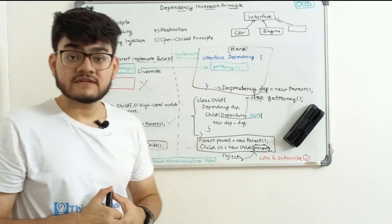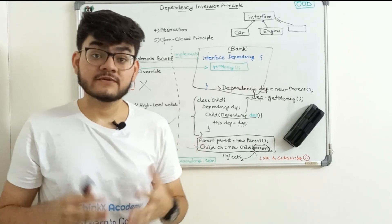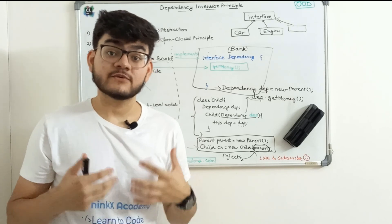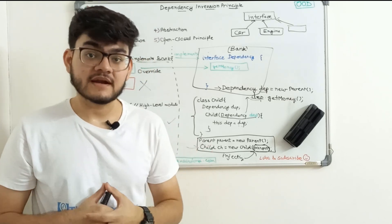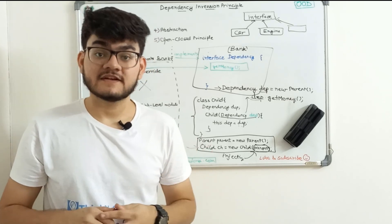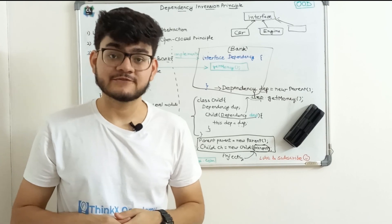These are the key important points of the Dependency Inversion Principle, and that's all for this video. In the next video onwards, we are going to start with the creational patterns, which are the 23 Gang of Four patterns. We'll start with our first pattern in the next video. Thanks for watching.